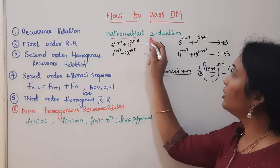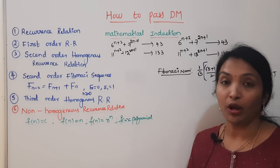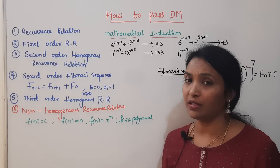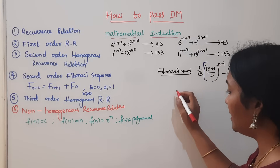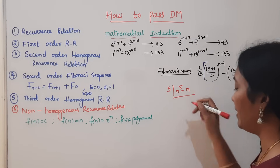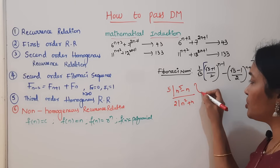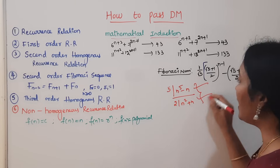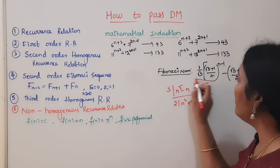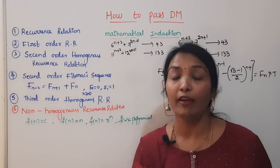Mathematical Induction has a lot of repeat. If you have short bits and Fibonacci number, then you have 5 marks in the long answer. For example: 5 is divisible by n to the power of 5 minus n, and 2 is divisible by n squared plus n. These are different questions - 3 marks and 5 marks. I will explain this clearly.